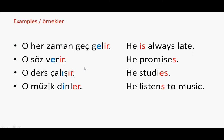Now let's see them in sentences. On one side are English examples, on the other Turkish examples. For example: O her zaman geç gelir — he always comes late. Look at the vowel in 'gelir': it has the E vowel, so we put IR. O söz verir — he keeps his promise; E vowel, so IR suffix. O ders çalışır — he studies; finished with I vowel, so we put IR. O müzik dinler — he listens to music; finished with I vowel, so we add ER.